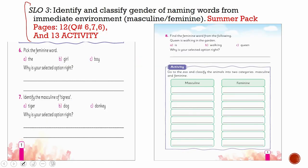Now let's look at the summer pack. Identify and classify gender naming words from the immediate environment. You need to have pages 12 and 13 in front of you — this is page number 12 and this is page number 13.